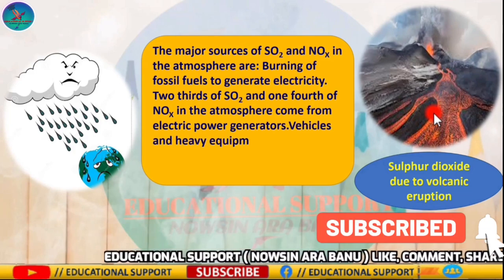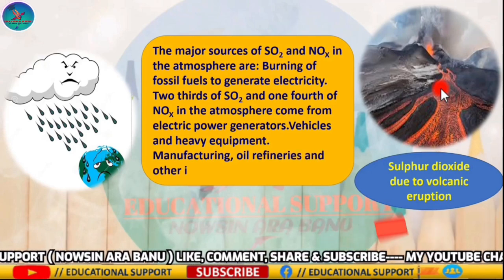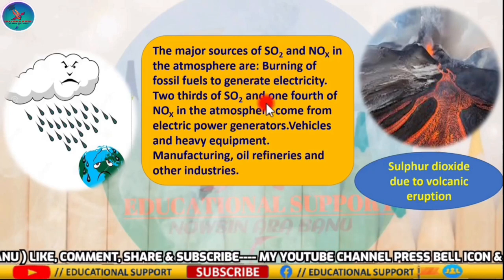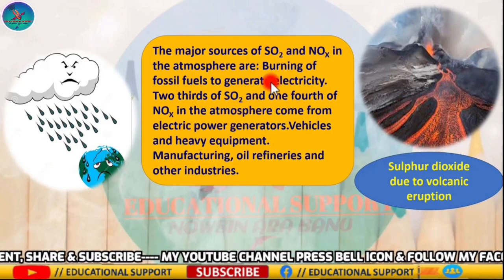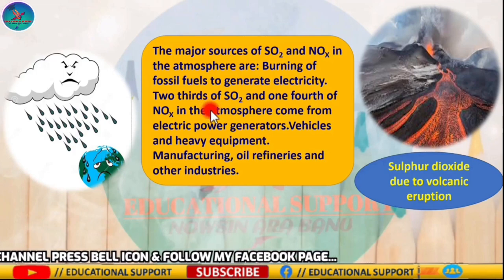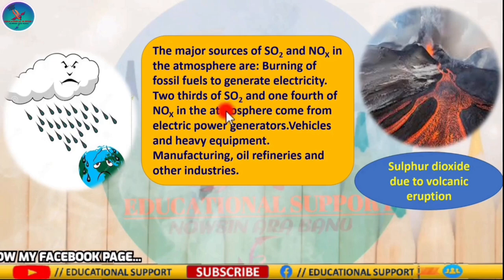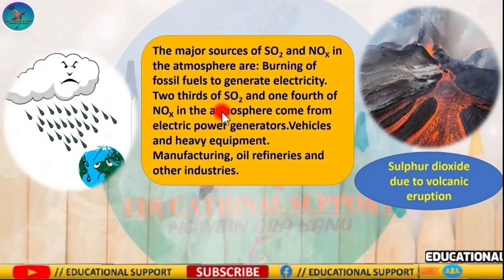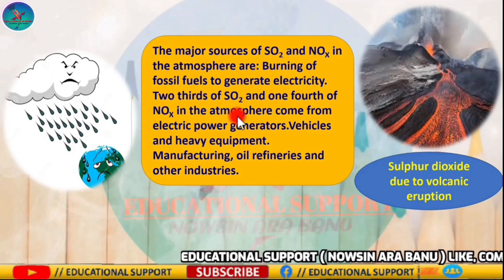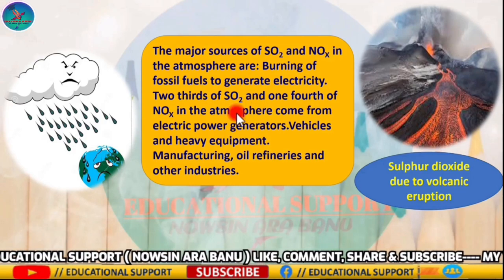The major sources of SO2 and NO2 in the atmosphere are the burning of fossil fuels to generate electricity. Two-thirds of SO2 and NO2 in the atmosphere come from electric power generators, vehicles and heavy equipment, manufacturing, oil refinement and other industries.